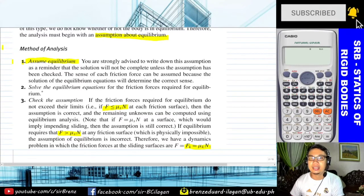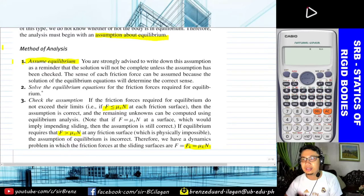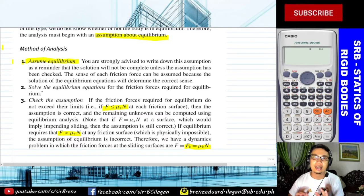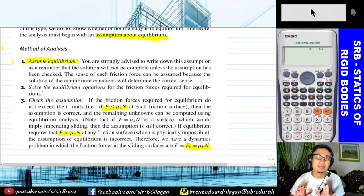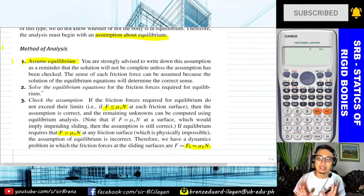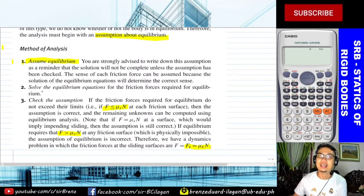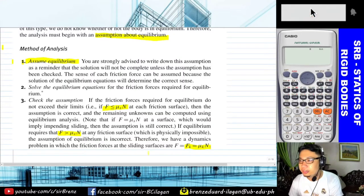Once the maximum static friction is exceeded, the object undergoes motion. As mentioned in previous videos, once you are in a state of motion, it becomes easier to push compared to when you are just starting. Once motion has started, there is less resistance acting on the body.